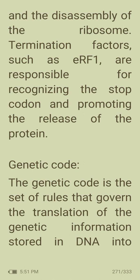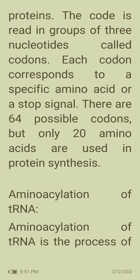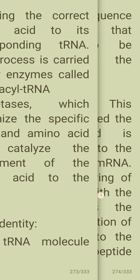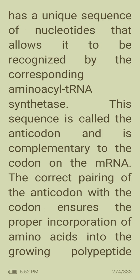The genetic code is the set of rules governing translation of genetic information stored in DNA into proteins, read in groups of three nucleotides called codons. Each codon corresponds to a specific amino acid or a stop signal; there are 64 possible codons but only 20 amino acids used in protein synthesis. Aminoacylation of tRNA is the process of attaching the correct amino acid to its corresponding tRNA, carried out by aminoacyl-tRNA synthetases. Each tRNA has a unique anticodon sequence complementary to its mRNA codon, ensuring proper incorporation of amino acids.